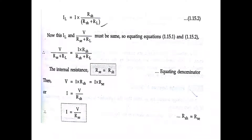Equating the two equations: V divided by RSC equals I multiplied by RSH divided by (RSH plus RL). Equating the denominators, since RL cancels from both sides, we get RSC equal to RSH. The internal resistance of the series circuit RSC equals the parallel resistance RSH. Finally, the current I equals V divided by RSH, which is consistent with Ohm's law: I equals V divided by R.